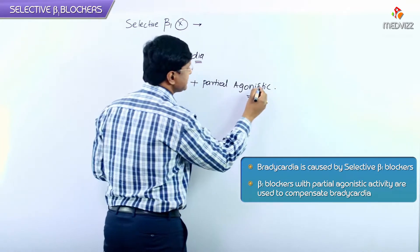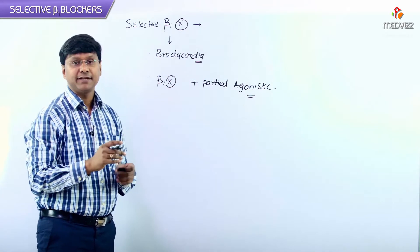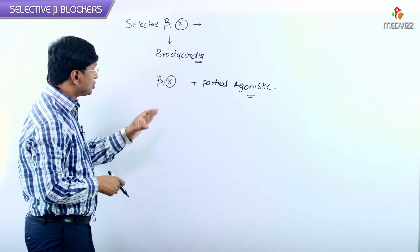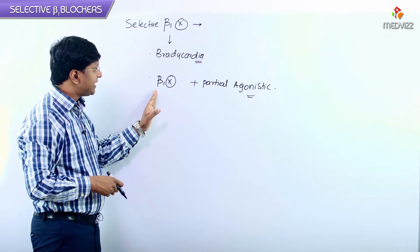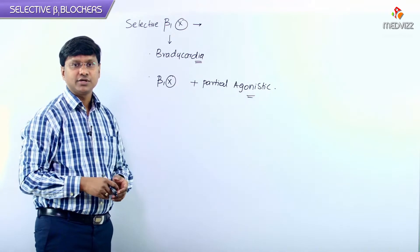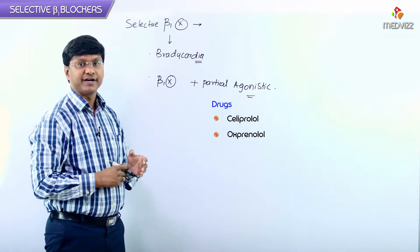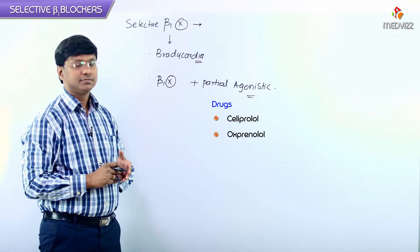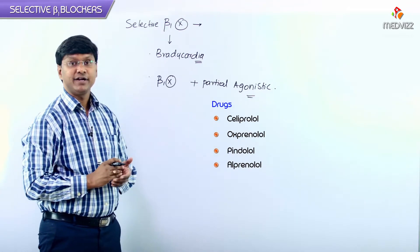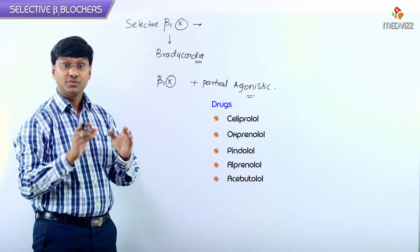Beta blockers with partial agonistic activity are preferred in such patients. The drugs which have beta-1 blockade along with partial agonistic activity include celiprolol, oxprenolol, pindolol, alprenolol, and acebutolol.